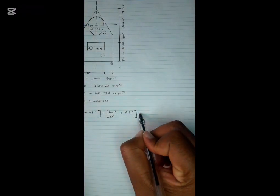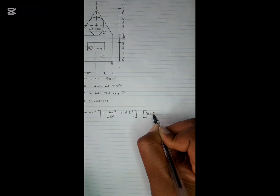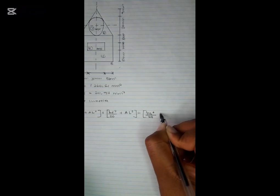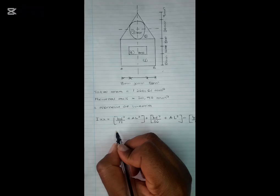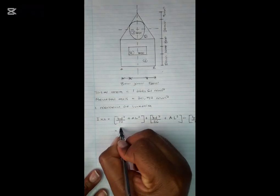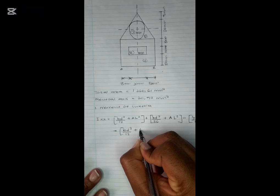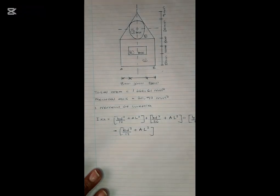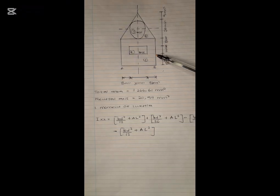You're going to subtract the third shape because it's a hole: open bracket, (πd⁴)/64 plus the area times the length squared. Then open bracket (bd³)/12 plus the area times the length squared, close. So these are the formulas for each shape — first shape, second, third, and fourth.